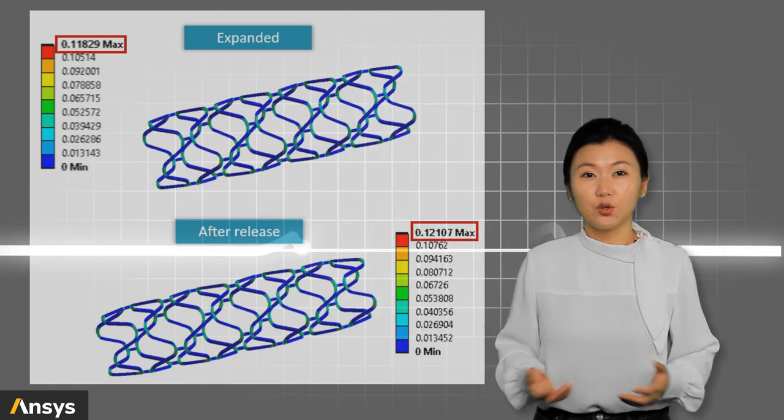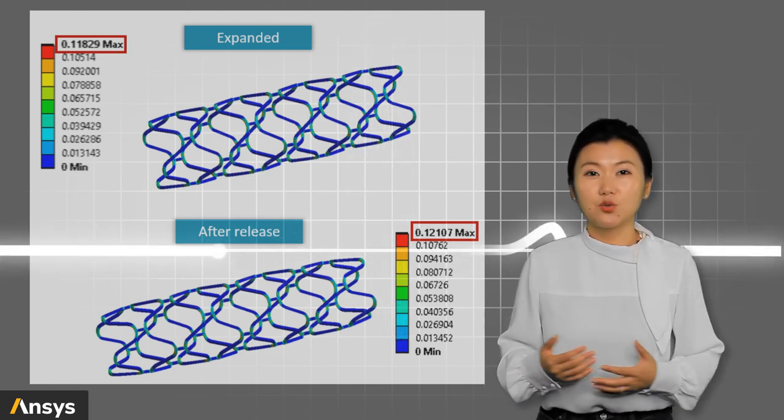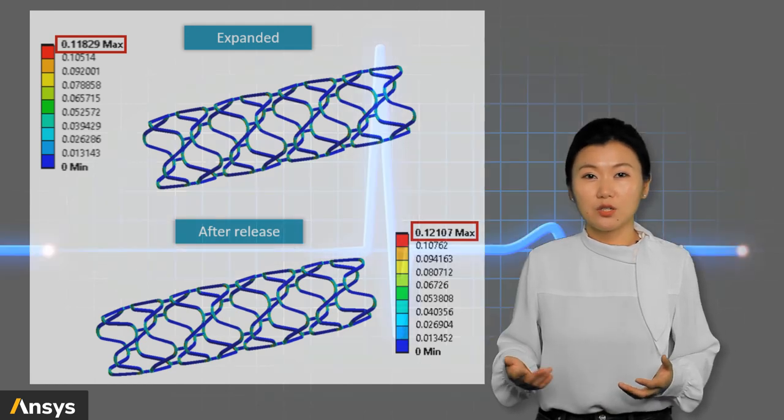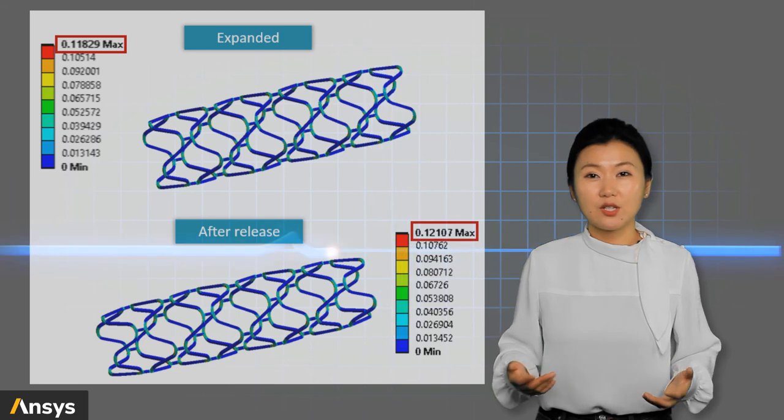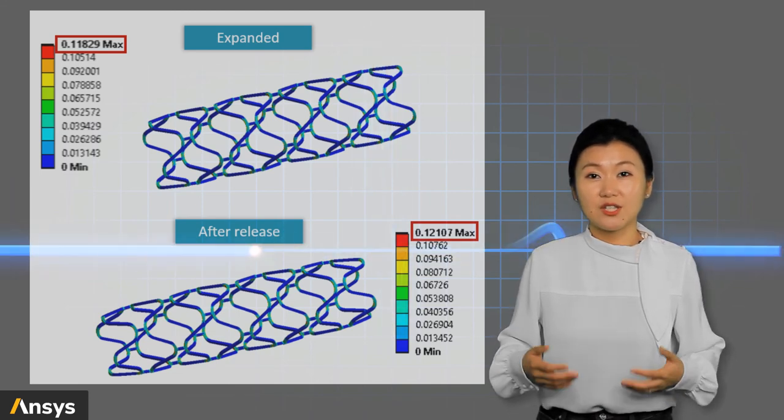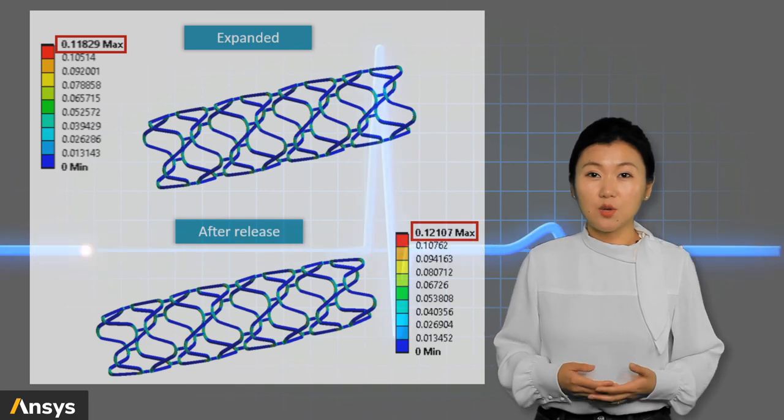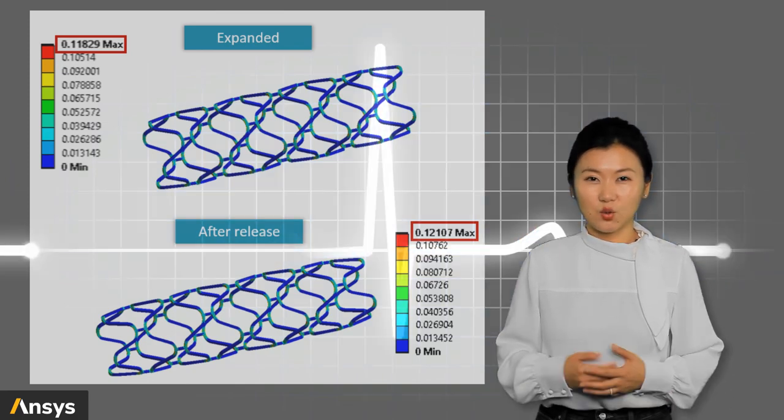In the process of recoil, these two parts would like to return to the original shape, and this will lead to push back load to the stent. For some local areas of the stent, the plastic strain starts to grow in the opposite direction. This way, the accumulated plastic strain is even increased.